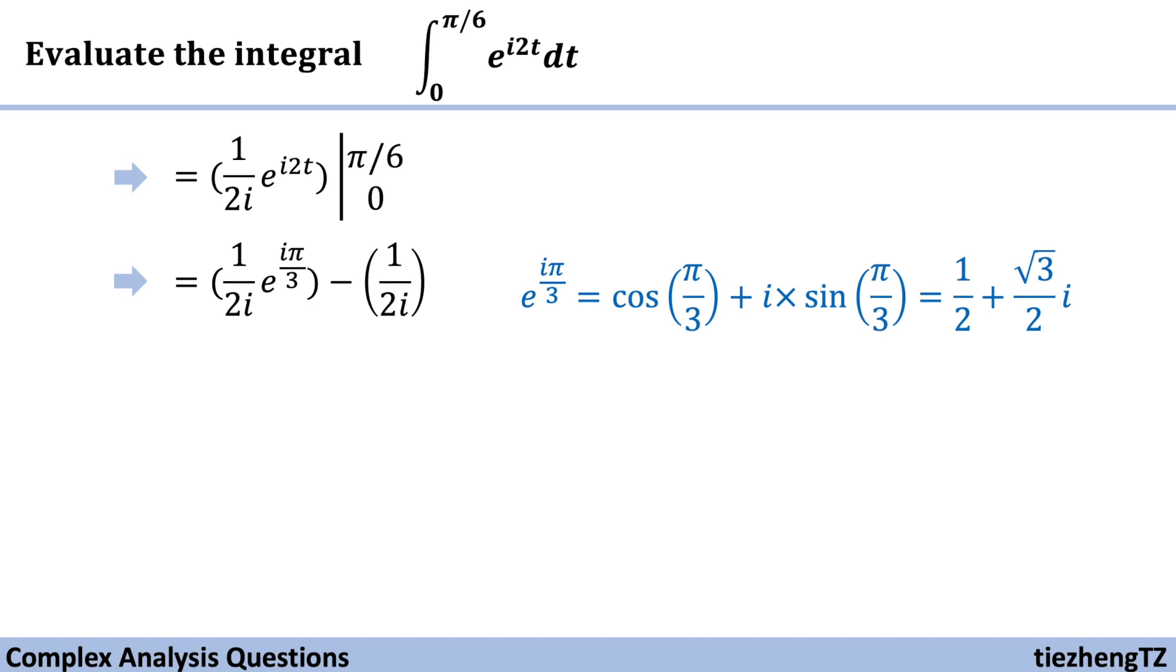And then we substitute this value back to our equation. Do the math. And we need to further simplify our equation, which becomes -1/2i times (1/4i + √3/4).